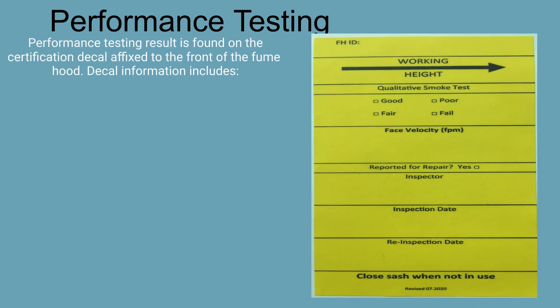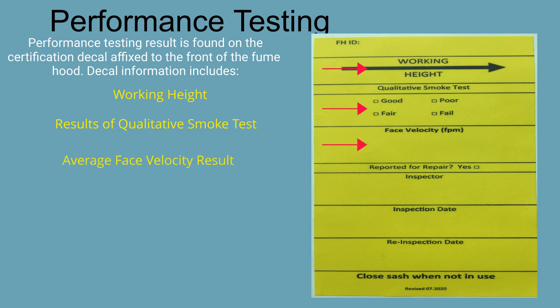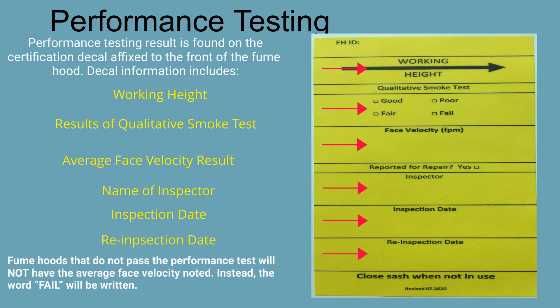Results of the latest fume hood performance test are found on the certification decal affixed to the front of the hood. The certification decal may be yellow, gold, or green in color. The information on the decal includes the working height, result of the qualitative smoke test, the measured average face velocity, the name of the inspector, the date of inspection, and the re-inspection due date. Fume hoods that do not pass the performance test will not have the average face velocity noted; instead, the word 'fail' will be written in the field.